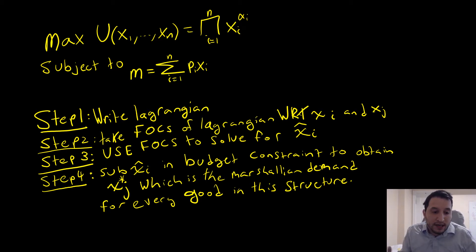We're going to first write our Lagrangian, take the first order conditions of our Lagrangian with respect to good i and good j. We're going to use those first order conditions to solve for some intermediate x_i hat. Then we're going to take our x_i hat and sub it into our budget constraint to obtain x_j hat, which is the Marshallian demand for every good j in this structure.